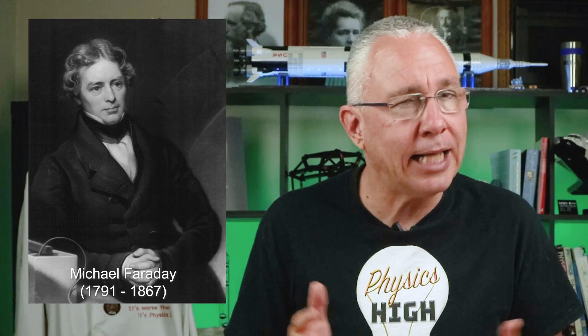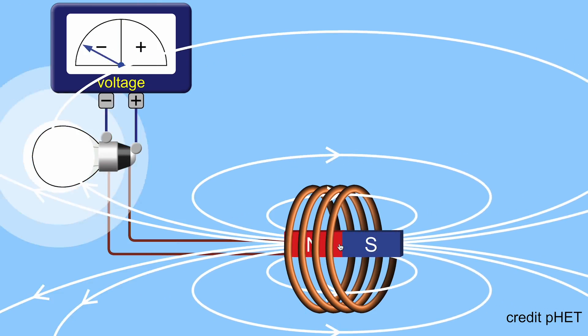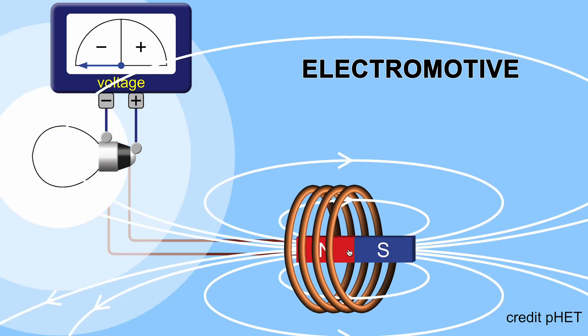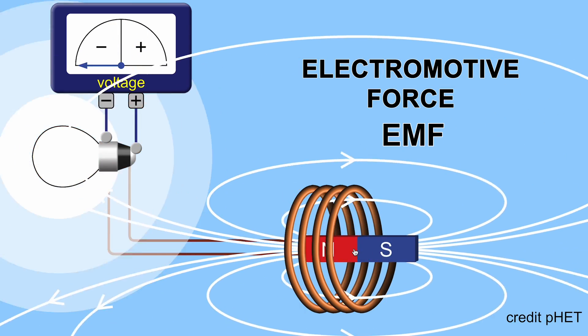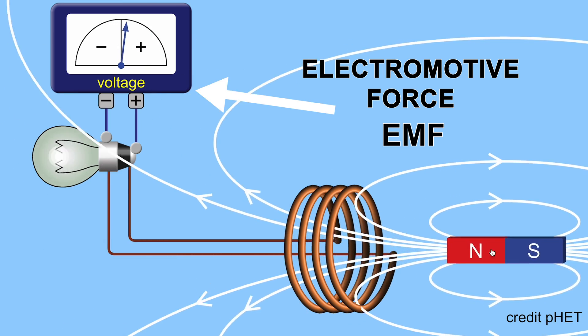It was Michael Faraday in 1831 who determined that moving a magnetic field across wires, or more correctly causing a rate of change of flux, you generate an electromotive force, or EMF for short. Now EMF is an archaic term and it's actually a voltage. But what is flux? I have a more detailed explanation of flux in another video and I encourage you to check out my website which has a lesson on magnetic flux.